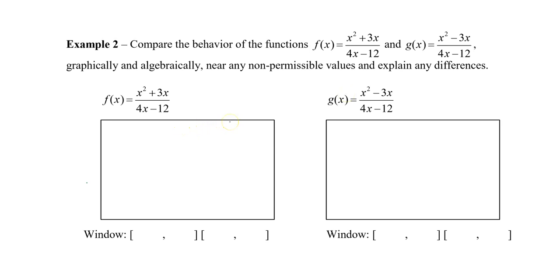To begin with, because both of them have a 4x minus 12, I'm going to start with identifying the non-permissible value. So we know that 4x minus 12 can't equal 0, so 4x can't equal 12, and x can't equal 3.